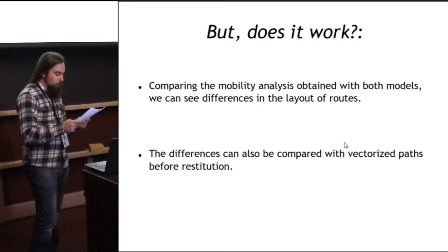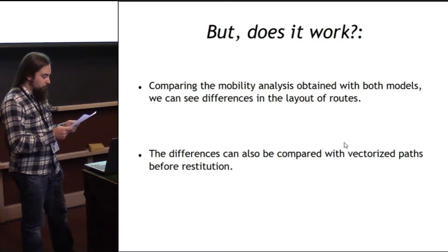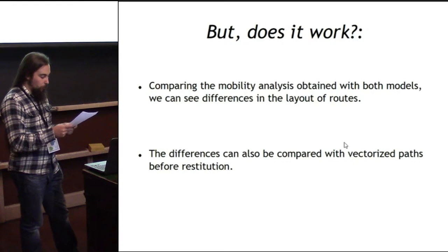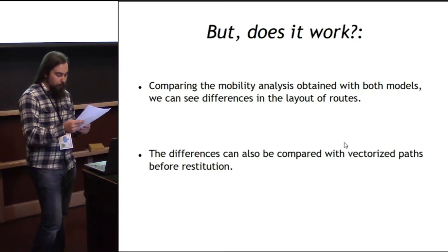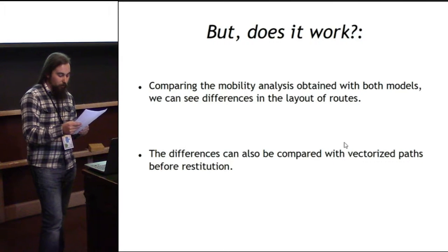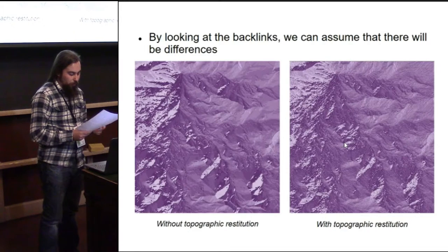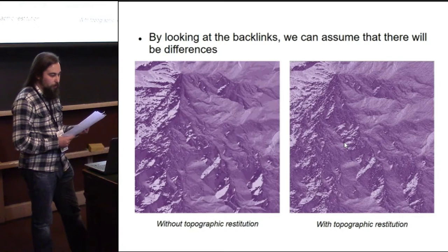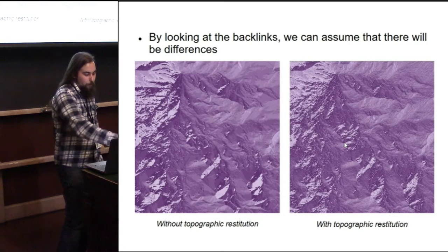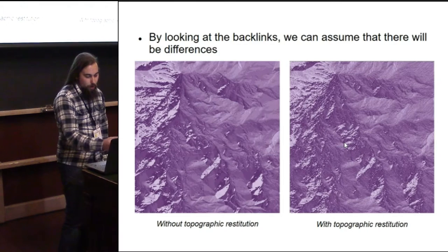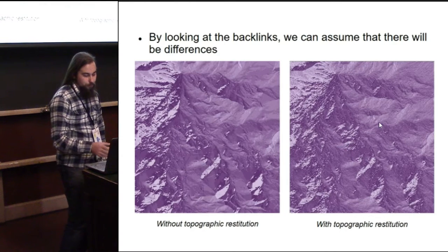Now it's time to check if the resolution is effective and brings different results in our calculations. For that, we calculate the same route from the model with and without restitution using Tobler and ArcMach algorithms. Also, we can compare the optimal paths with the polylines and buffers we used to erase the points. Before finishing the calculation, watching the backlinks obtained, we can see certain differences among them. The left one, without restitution, shows certain marks of the current roads, while with the right one all the backlinks are more natural.